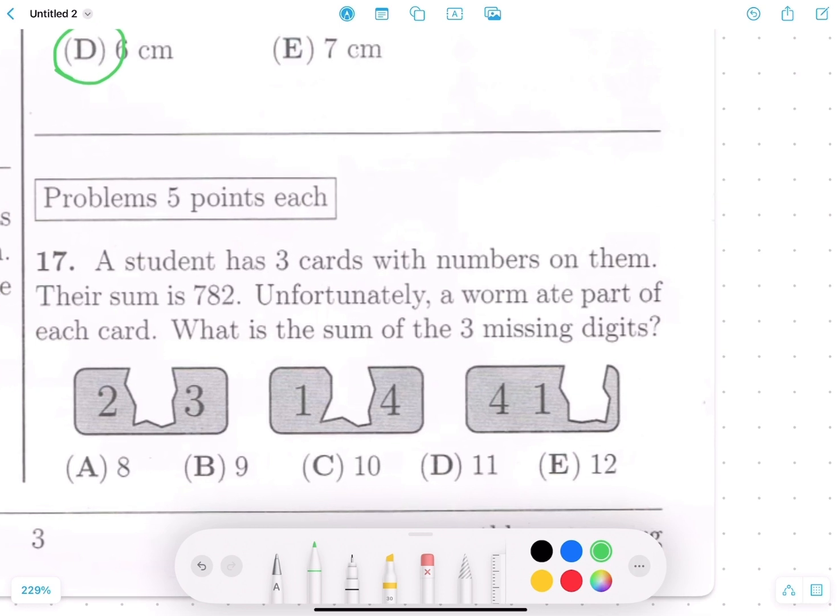Okay now here's 17, the first 5 mark question. A student has three cards with numbers on them. Their sum is 782. Unfortunately a worm ate part of each card. What is the sum of the three missing digits? Wow! I didn't know worms ate that much. But anyway so let's highlight some important information. There are three cards we can see them with numbers on them. Their sum is 782. So these are three digit numbers whose sum is 782. The worm ate parts of each card. These digits are missing over here. So there's the tens digit missing here, tens digit missing here, and the ones digit missing here. What is the sum of the three missing digits?